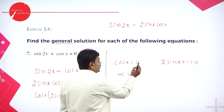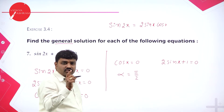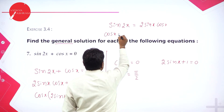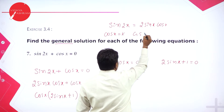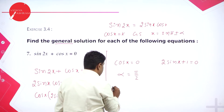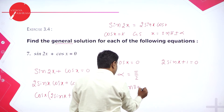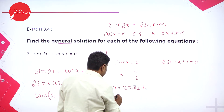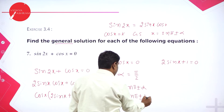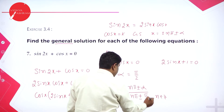For cos x equals 0: alpha is pi by 2 (cos 90 is 0). The general solution for cos x equal to k is x equals 2n pi plus or minus alpha. So x equals 2n pi plus or minus pi by 2, where n belongs to integers.